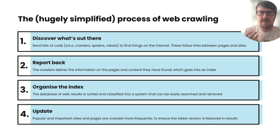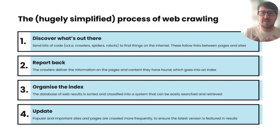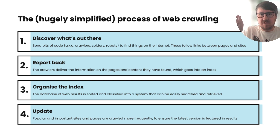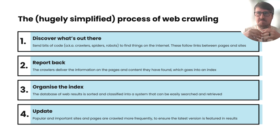So how can we ensure our content appears predominantly in search results? We're going to talk about web crawling in hugely simplified terminology first, before we start talking about the things that can impact it. The process of web crawling — you can imagine it as discovering what's out there on the internet in its simplest terms. This involves sending snippets of code to explore the vast online landscape, performed by entities known as spiders, bots, or crawlers.